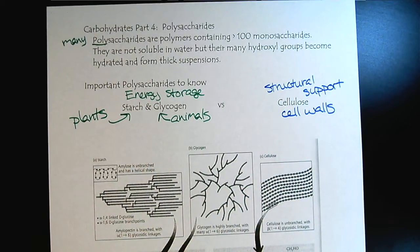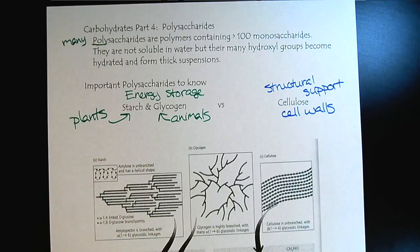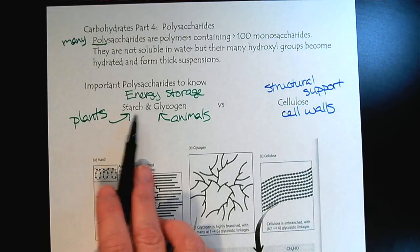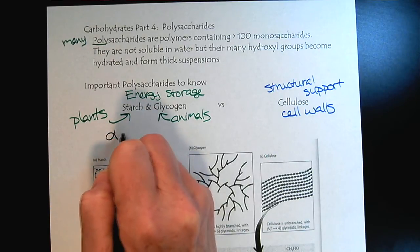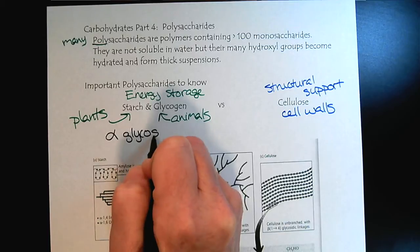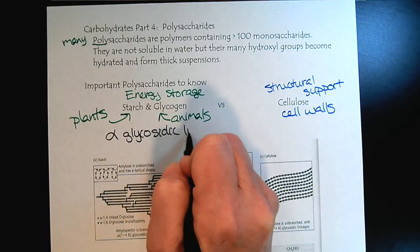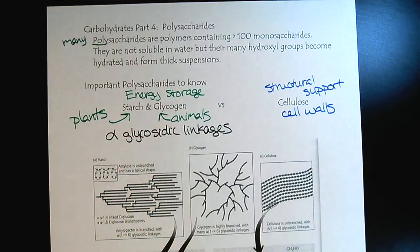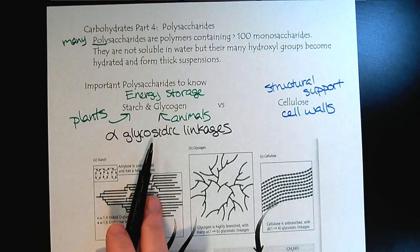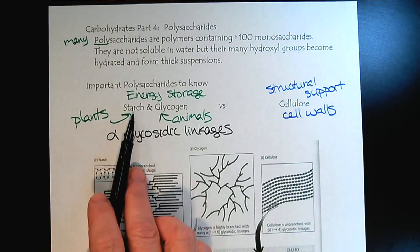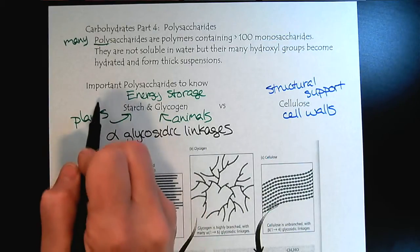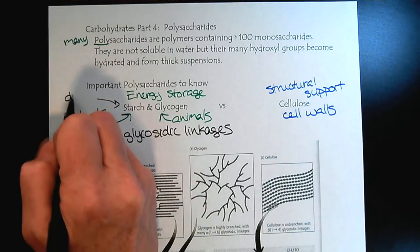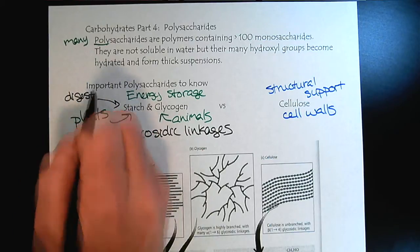Now, what's interesting then, is that both starch and glycogen, they're going to use the alpha glycosidic linkages. And the interesting thing to me here is, is that we have the ability, right, we can digest starch, right? So when we eat plants, we can digest the starch. Right? So humans are able to digest starch and other animals.